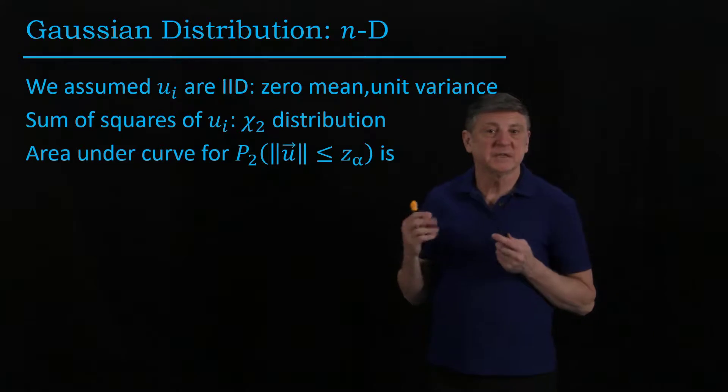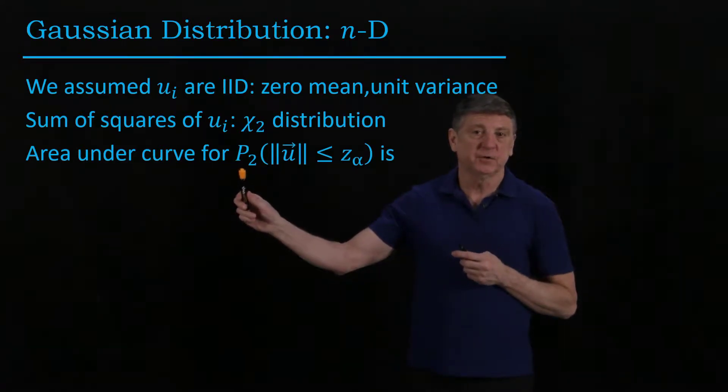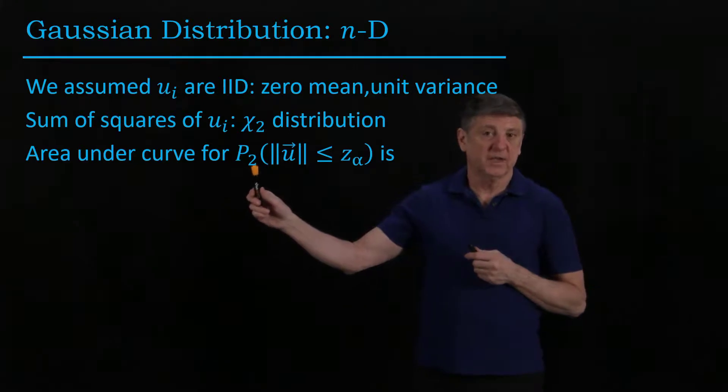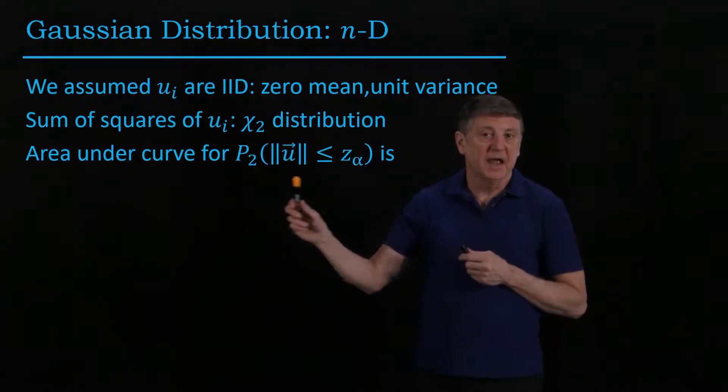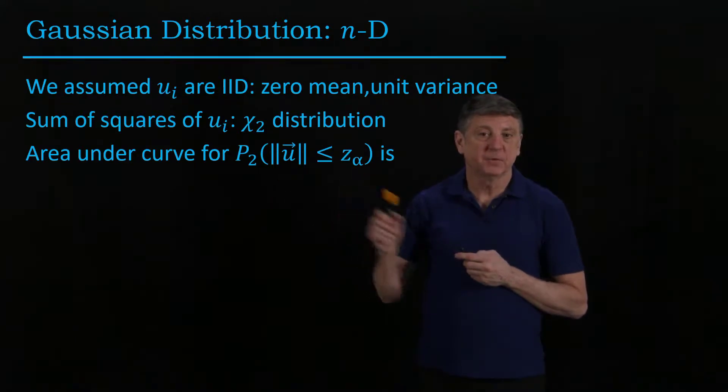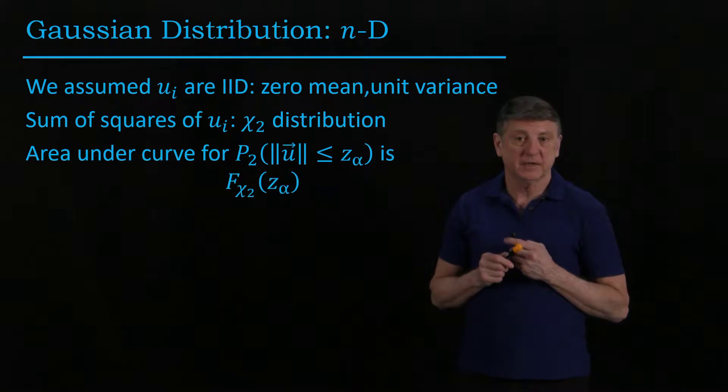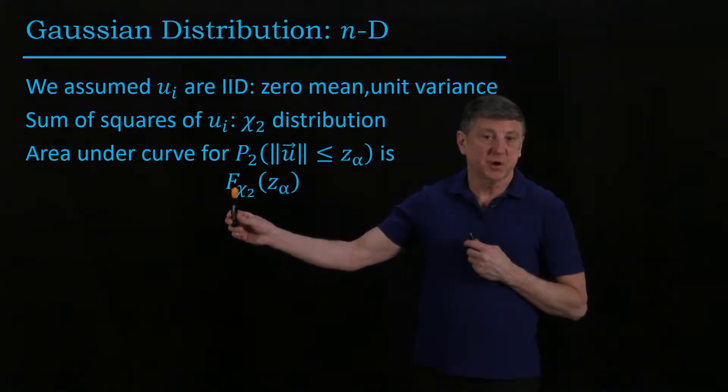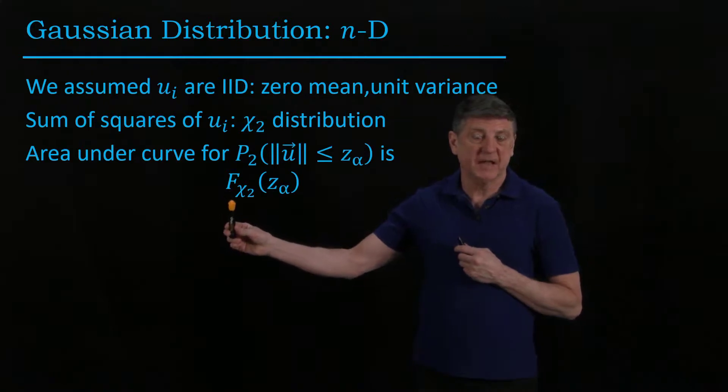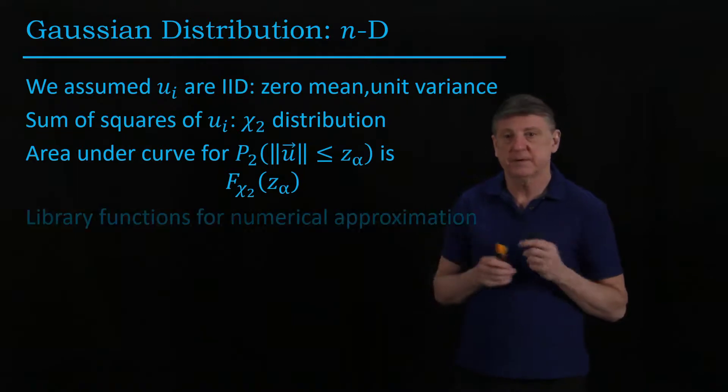So what that gives us, the chi-square distribution lets us calculate the area under the curve for, in our case we used two, but now we can insert any n here, and we could find that for using our z alpha that we previously calculated. So this would be referred to as the, this is often in statistics, the capital F sub chi-squared of your, of the score of your variate.